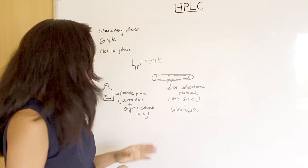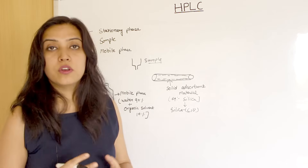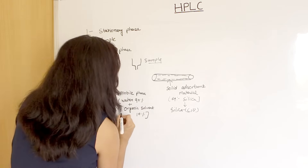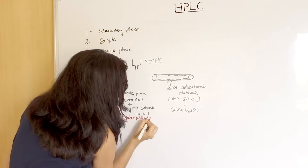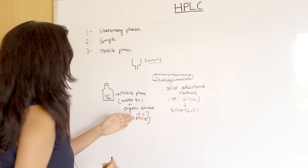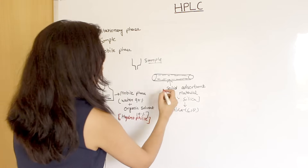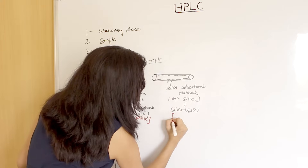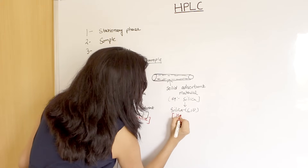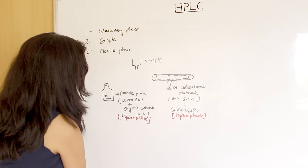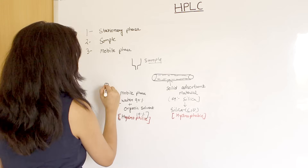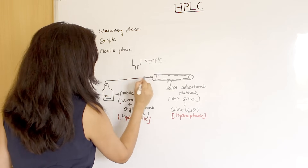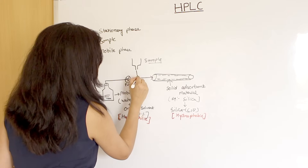The mobile phase is water and about 10% organic solvent mixed together. So this is a hydrophilic mobile phase, because the water content is more. The solid absorbent material is hydrophobic. With the help of a pump, the mobile phase will run through the column.